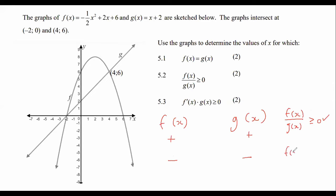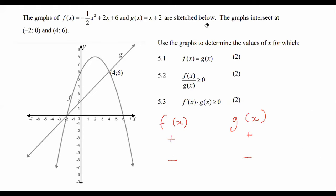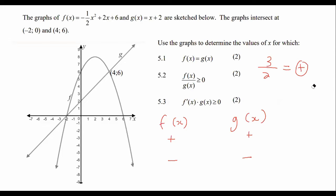If they are both negative, then if you divide two negatives it will still give you a positive. So that's how you need to understand these questions. If you have a positive number divided by a positive number, that gives you a positive. And if you have a negative number divided by a negative number, that is also positive.